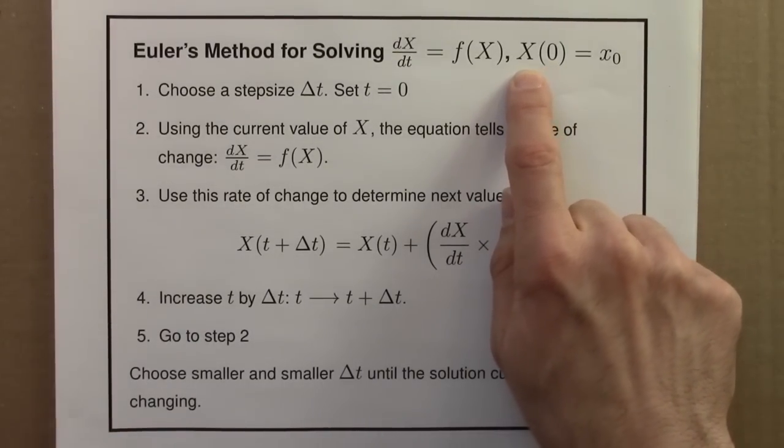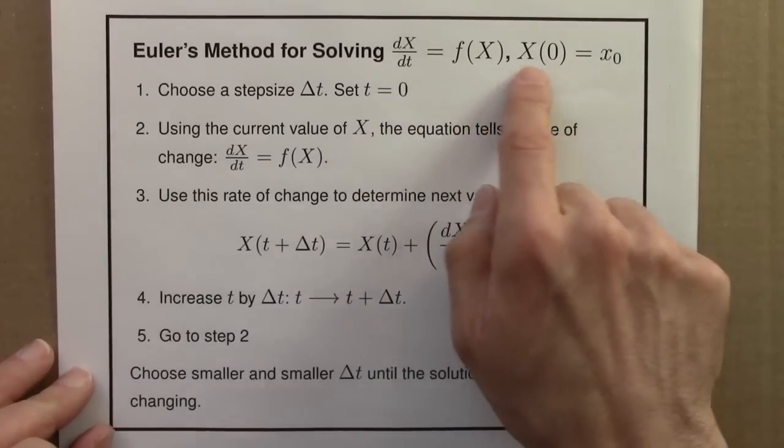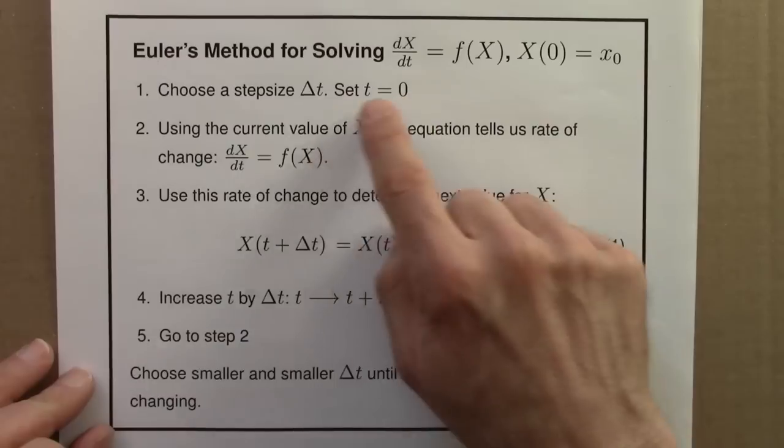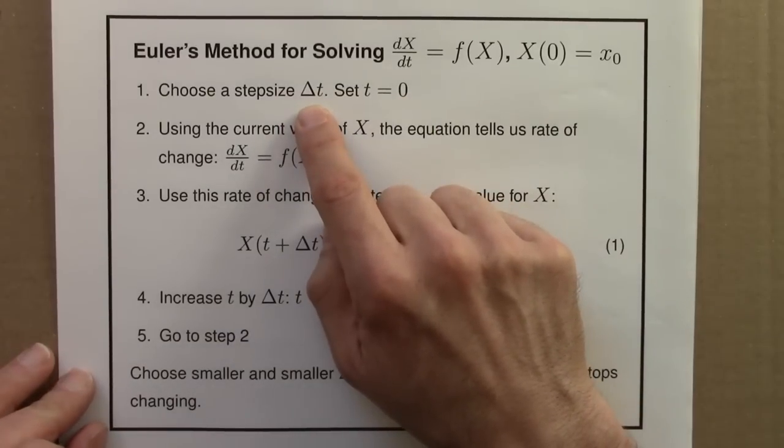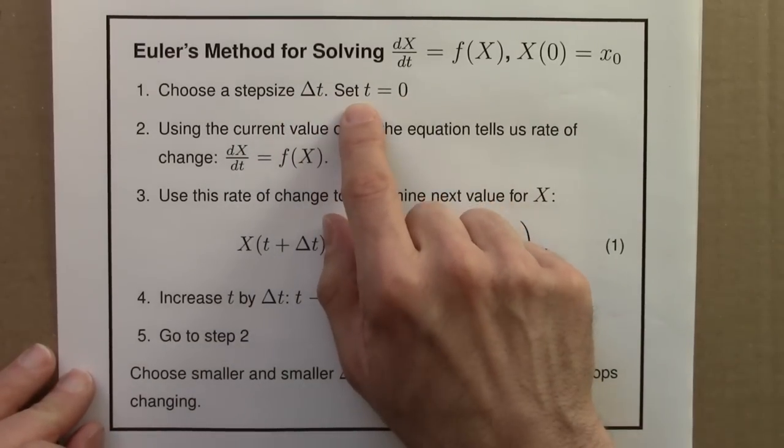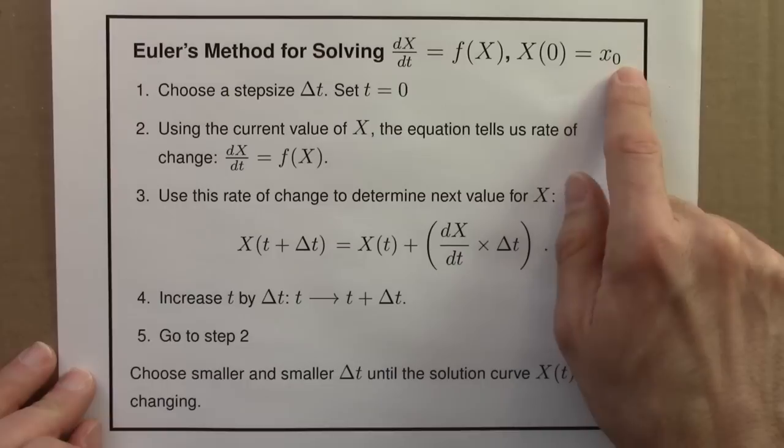So this could be temperature, this could be position, it could be anything. So we start, we need to choose a step size, that's a choice that we get to make. And we'll start at time t equals zero, where we know the x value.